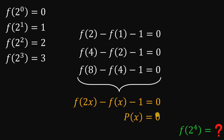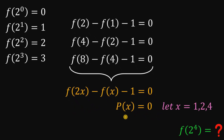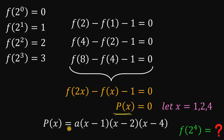Now why is this important? When we let x equal 1, 2, or 4, P of x is definitely equal to 0, because P of x is f of 2x minus f of x minus 1. This tells us that we can rewrite P of x as A times (x minus 1) times (x minus 2) times (x minus 4), where A is a constant. When x equals 1, x minus 1 is 0, so the right-hand side becomes 0. Same when x equals 2 or x equals 4. So P of x equals 0 at x equals 1, 2, or 4.